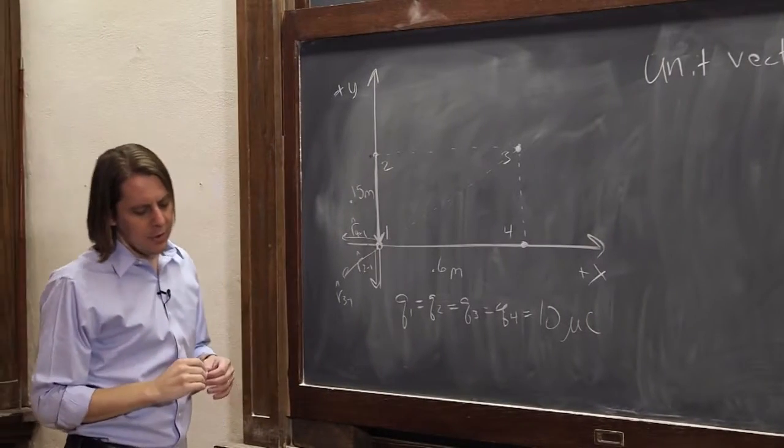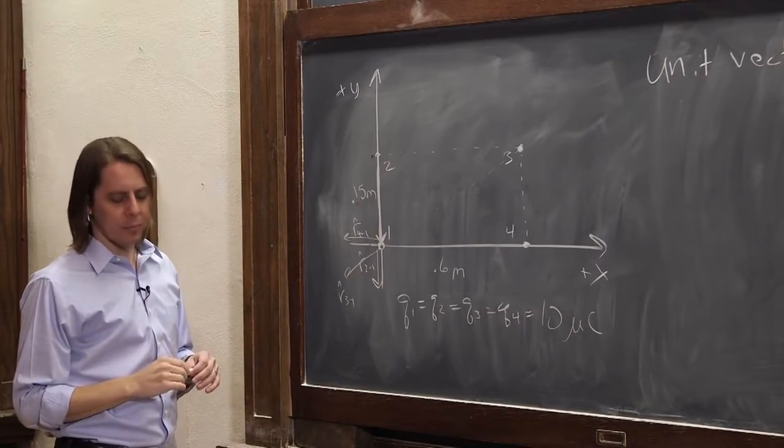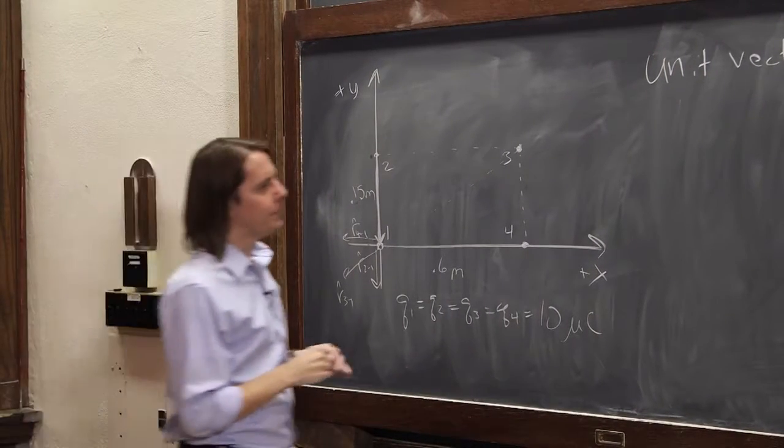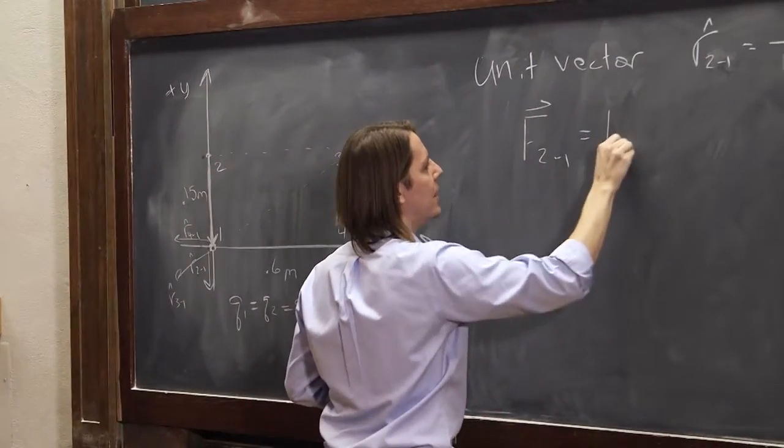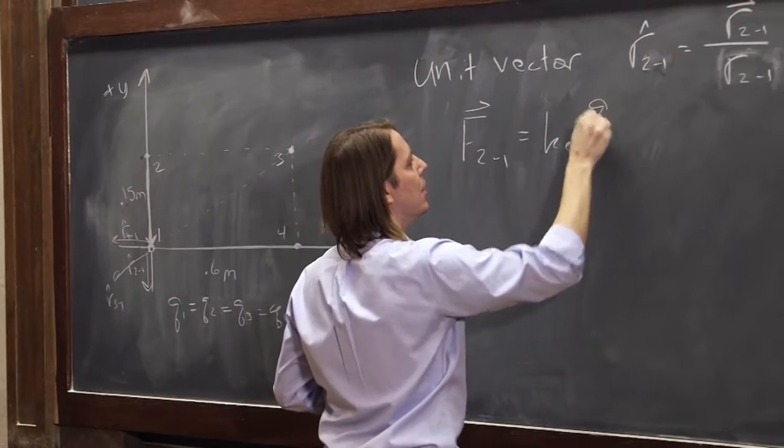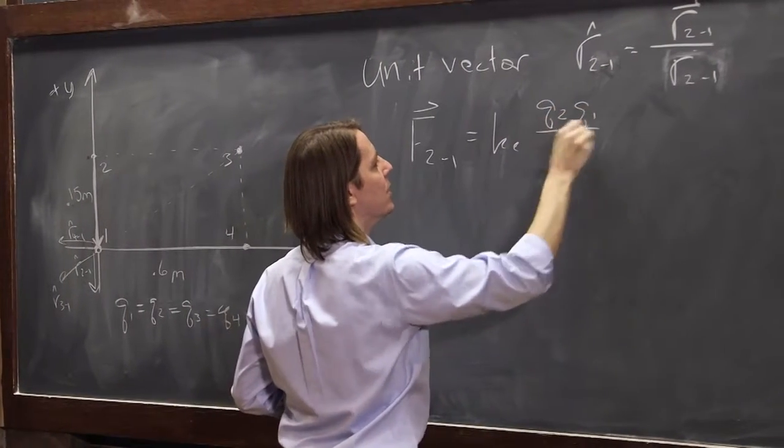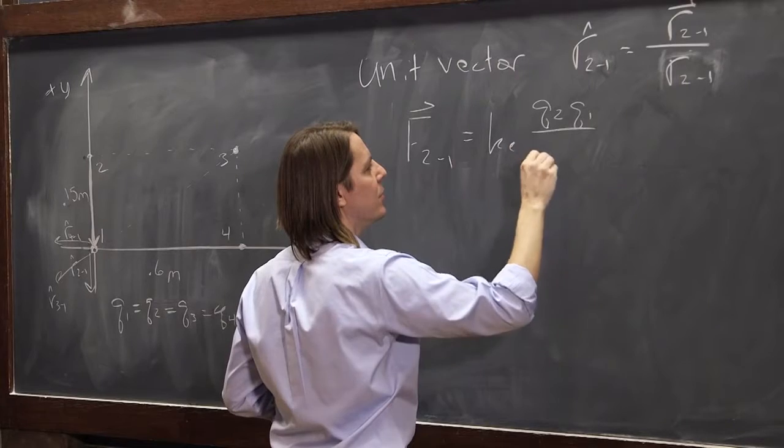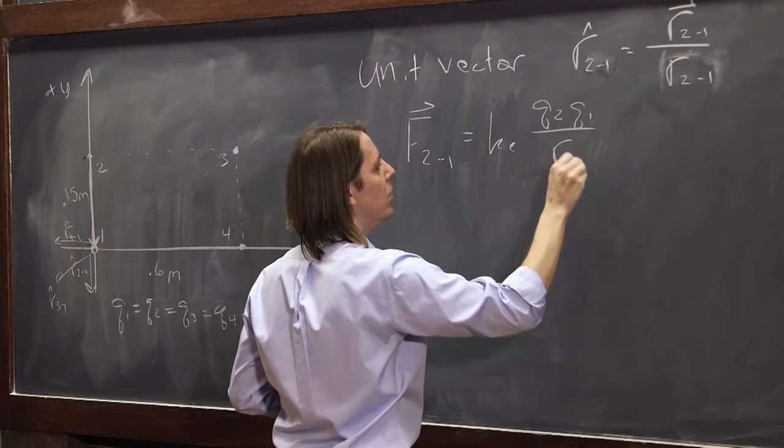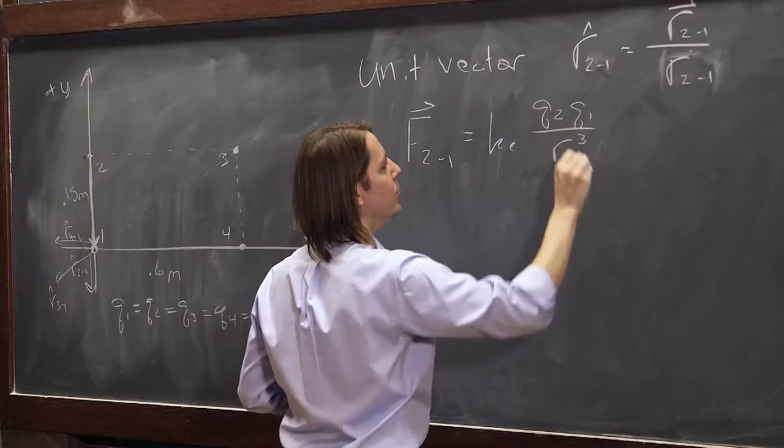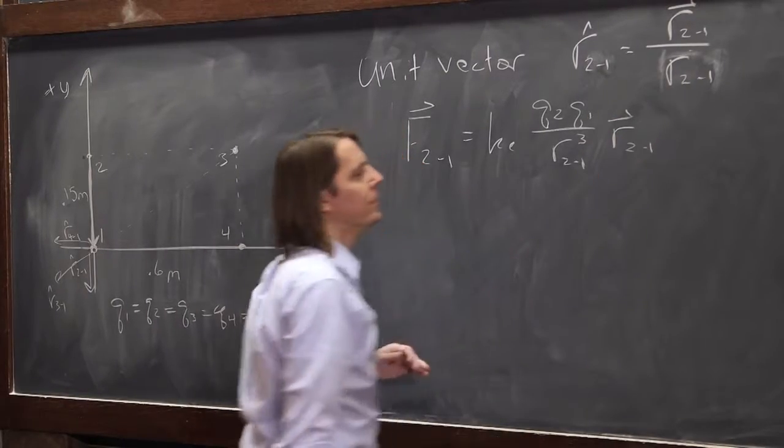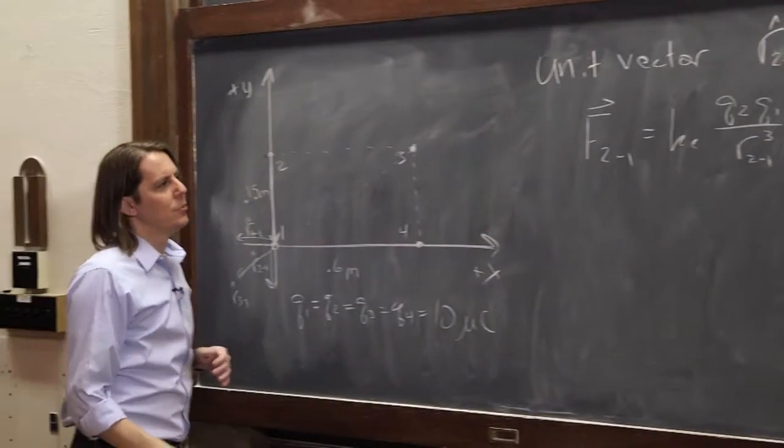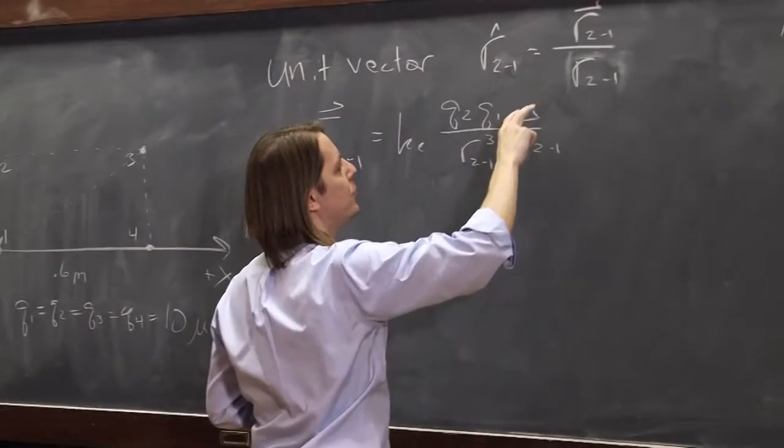Okay, so now, here's the scary part. Now we're going to write Coulomb's Law again for the case 2 to 1. It's going to be KE, it's still going to be Q2, Q1. But now, it's going to be over r 2,1 cubed times r vector 2,1. See?